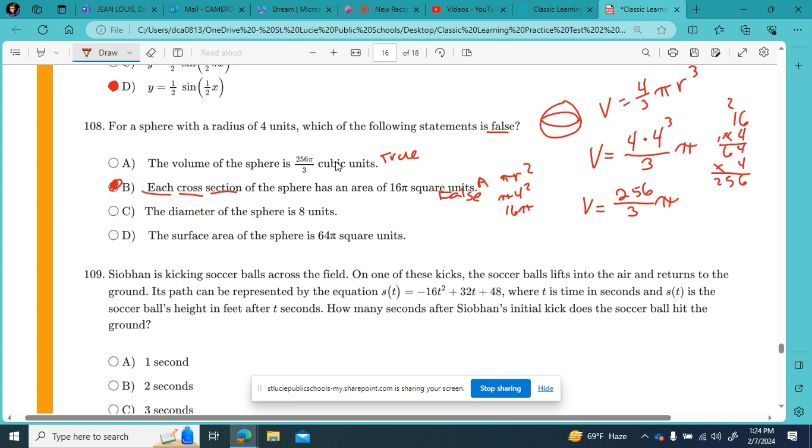The diameter of the sphere is eight units. Yes, if the radius equals four, the diameter equals two times the radius, which would be eight. That's true. And the surface area of the sphere is 64 pi square units. Do they give you that formula on the reference sheet? Surface area of the sphere, yeah, it's four pi r squared. So you can check that. Four pi r squared, radius is four, r squared is 16. Four times 16 is 64. So that was true as well.